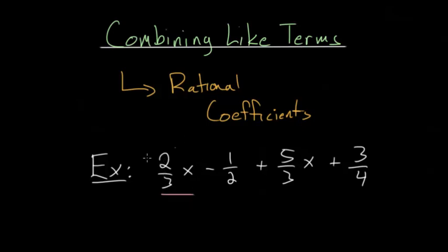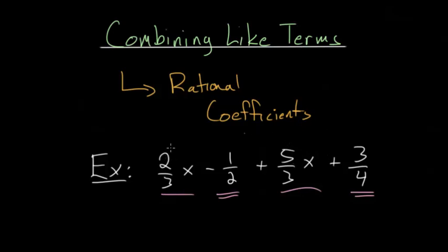Here we have an x term and another x term. Here is a constant term, and here also is a constant term. So we want to combine the x's. We have two-thirds x and five-thirds x. Essentially, we're just going to add the fractions: two-thirds plus five-thirds. Since they have the same denominator, we can just add straight across the numerator to get seven-thirds x.